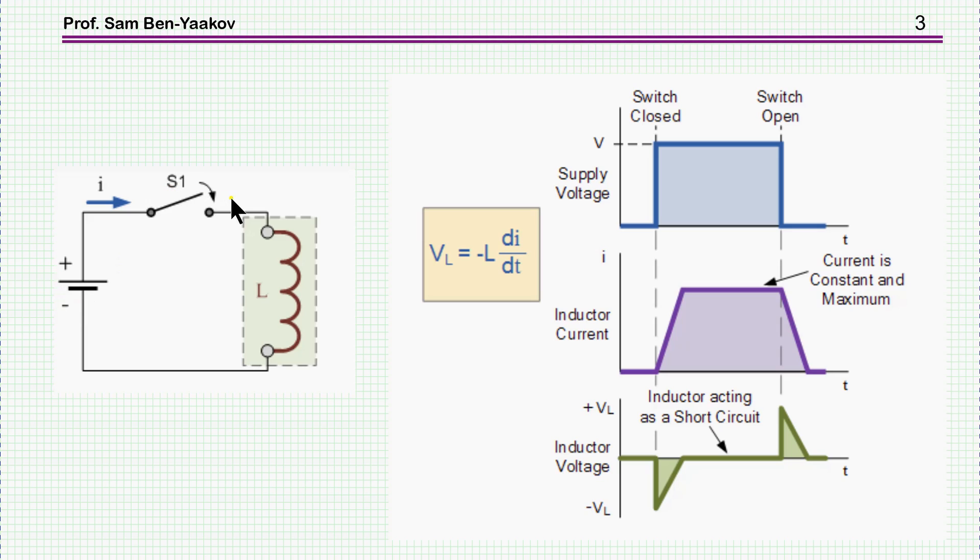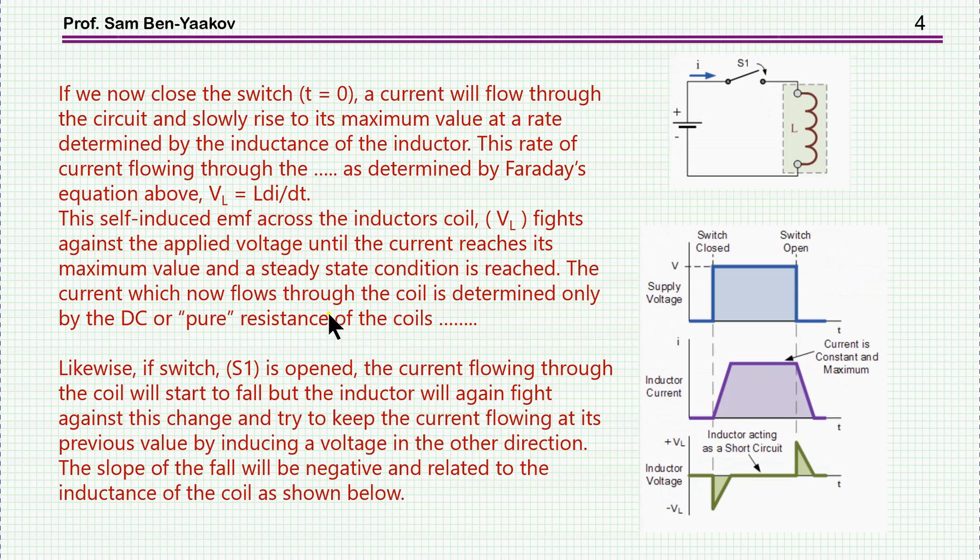Here is the switch, here is the inductor, and here are the waveforms suggested by the tutorial and explained in the text. I've cut some parts of it just to get the essential explanation. So here it says the following: if we now close the switch at t equals zero, this is this switch, current will flow through the circuit and slowly rise to its maximum value at a rate determined by the inductance of the inductor.